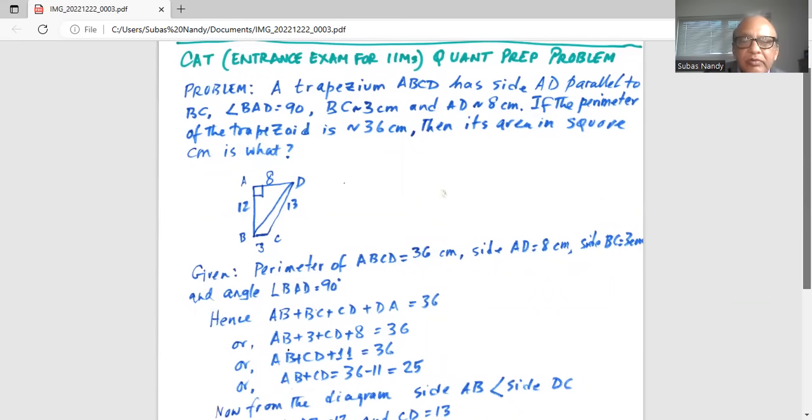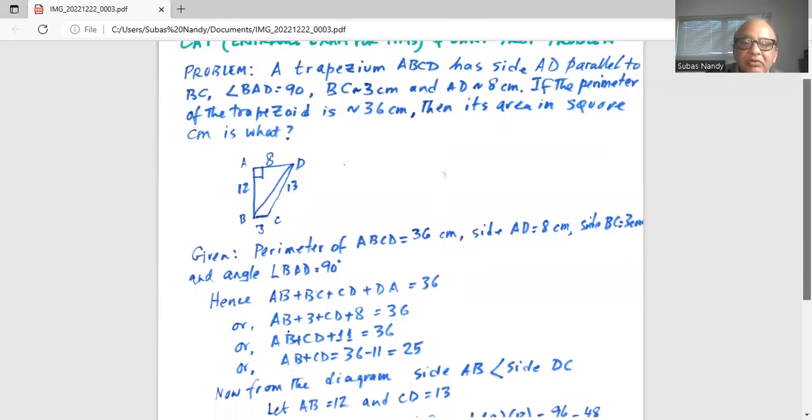So we know the perimeter, the sum of the four sides, is AB plus BC plus CD plus DA equals 36 centimeters. Now AB is unknown plus BC is 3 plus CD is unknown plus DA is 8 equals 36. Hence AB plus CD plus 11 equals 36, or AB plus CD equals 36 minus 11 equals 25.